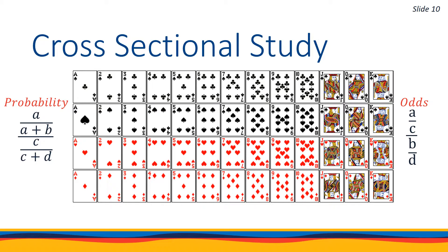And if drawing based on face value, there are 13 possible outcomes — aces, twos to tens, and then jack, queen, and king. This results in probabilities of 50% for color, 25% for suit, and 7.7% for face value. However, odds represent the number of events for a given outcome divided by the number of events for each other outcome. For example, the odds of drawing a red card is 1 to 1 because there are an equal number of red and black cards. The odds of drawing a club is 1 to 3 because there are 3 times as many non-clubs as clubs. And the odds of drawing a king are 1 to 12 because there are 12 times as many non-kings as kings.